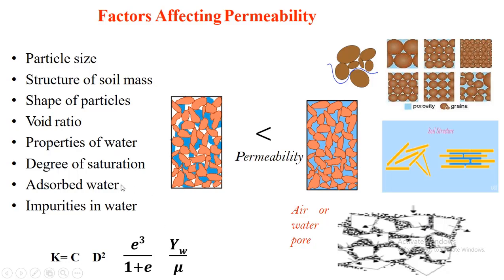Adsorbed water is water held by electrochemical forces on the soil surface, which results in decreasing permeability. Impurities in water — such as debris or other materials present in the voids — will block the flow of water through the soil mass. We will now examine each factor affecting permeability in detail, point by point.